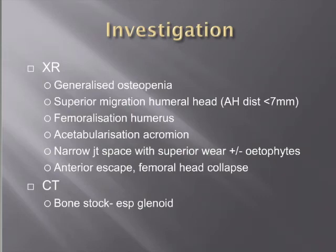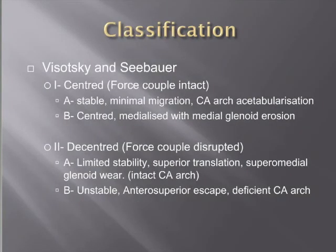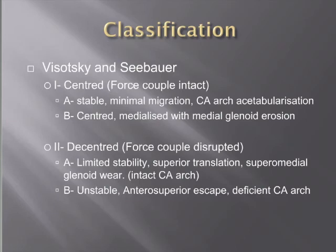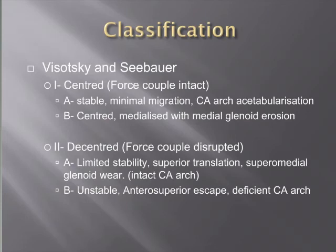Seebauer and Walch classified rotator cuff arthropathy. Type 1 is centred, implying some degree of intact force coupling; Type 2 is uncentred, implying disrupted force coupling. Type 1A is stable with minimal migration and only cortical acromial acetabularization. Type 1B has medialization with some medial glenoid erosion. Type 2A has limited stability with superior translation, superomedial glenoid wear, and an intact coracoacromial arch — important for management. Type 2B is essentially unstable with anterosuperior escape, implying a deficient coracoacromial arch.